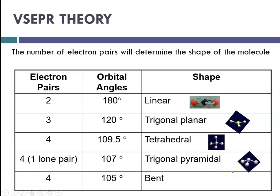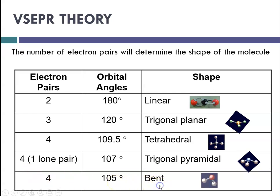A trigonal pyramidal shape has one lone pair, so there are four things, but one of them is a lone pair. You get this trigonal pyramidal shape because the lone pair occupies space up here, similar to tetrahedral. Finally, if you have four things attached to a central atom with two bonding pairs and two lone pairs, you can get something called bent.